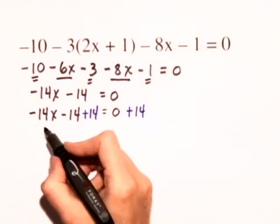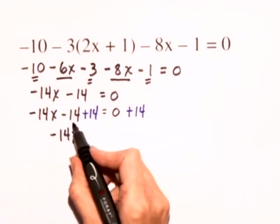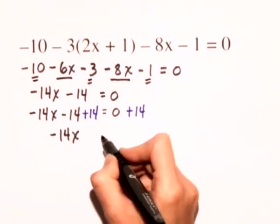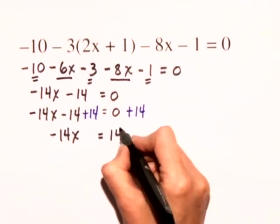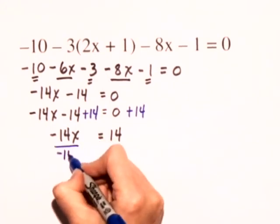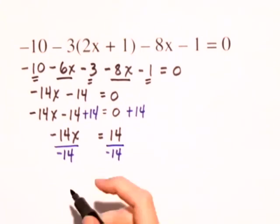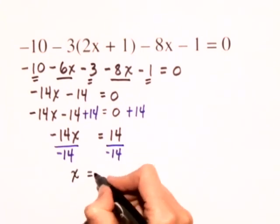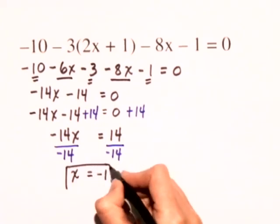On the left-hand side, we just have negative 14x since minus 14 plus 14 adds to 0 equals, on the right-hand side, we have 14. Our last step will be to divide both sides of this equation by negative 14. And our solution is that x is equal to 14 divided by negative 14 gives us negative 1.